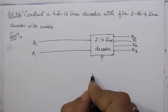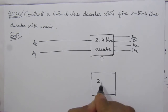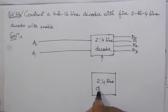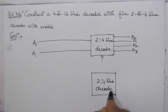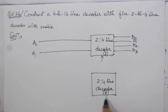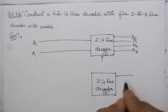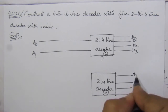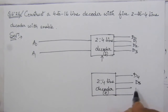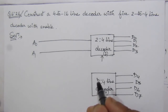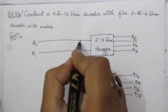Similarly, we will have another decoder — this is decoder number 1, and this is decoder number 2. It will also have 4 output lines: D4, D5, D6, D7. Here also we will have these 2 input lines.